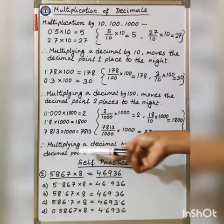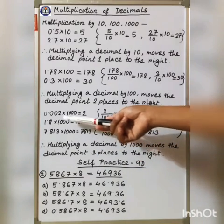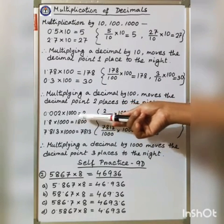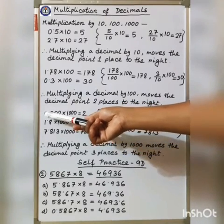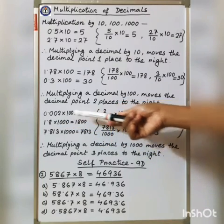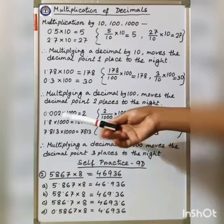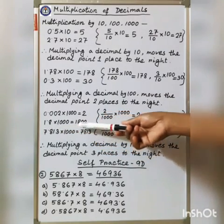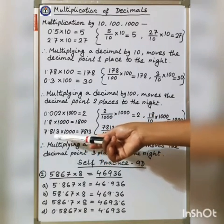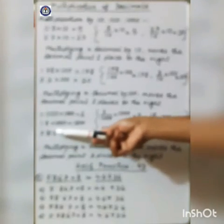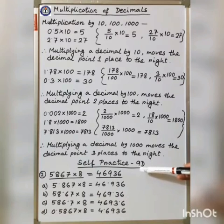Therefore, multiplying a decimal by 1000 moves the decimal point three places to the right — 3 zeros in 1000, so place the decimal point three digits to the right: count 1, 2, 3. Put the decimal point there and the answer is 2. For 1.8 there is one digit, so first add zeros, then place the decimal point three digits to the right: 1, 2, 3 — the answer is 1800. For 7.813, place the decimal point three digits to the right: 1, 2, 3 — the answer is 7813.